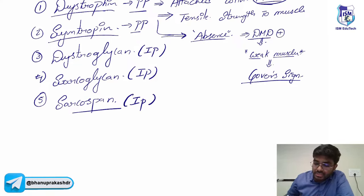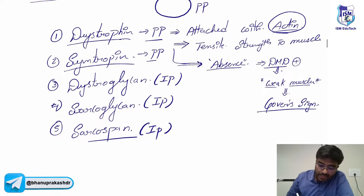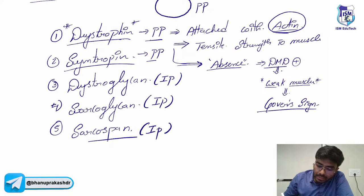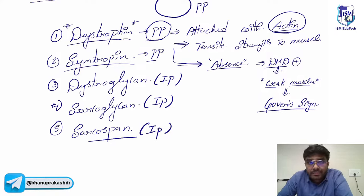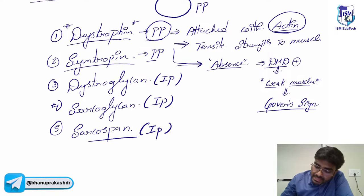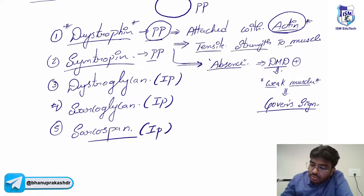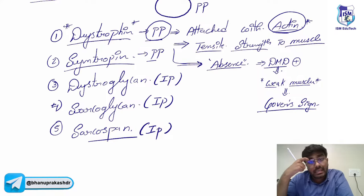Gower's sign is present in Duchenne Muscular Dystrophy. In DMD, dystrophin protein is absent. Dystrophin is a peripheral protein attached with cytoskeletal actin that gives tensile strength to the muscle.